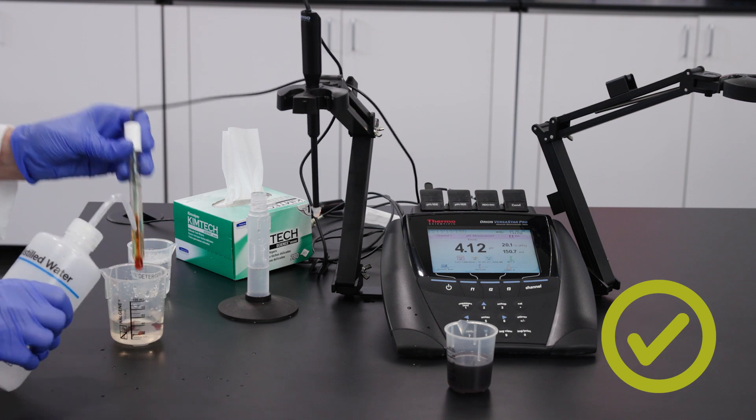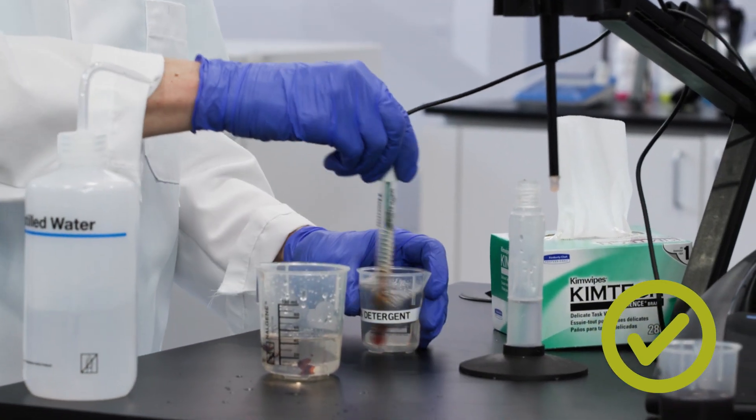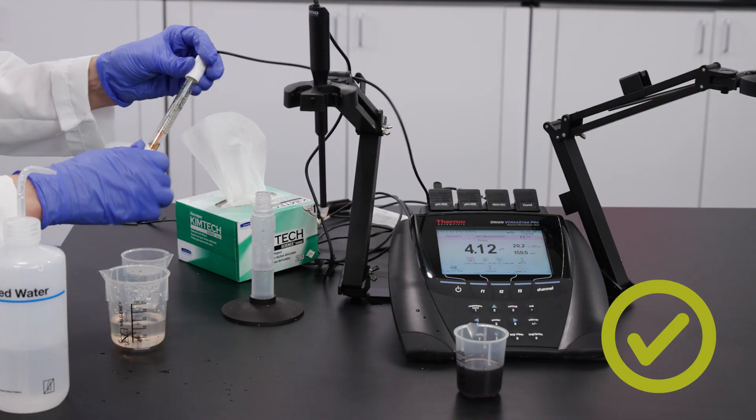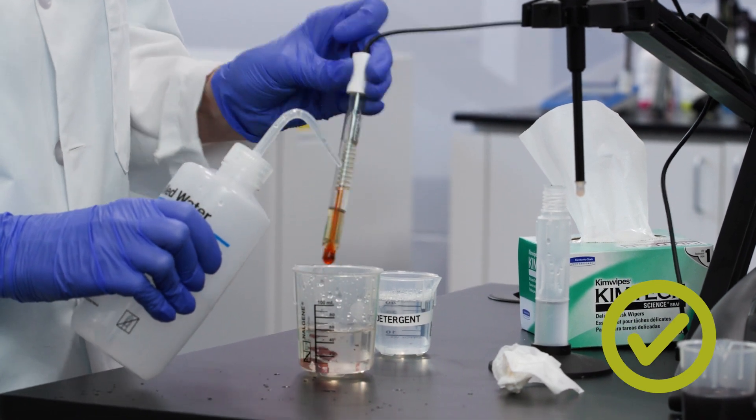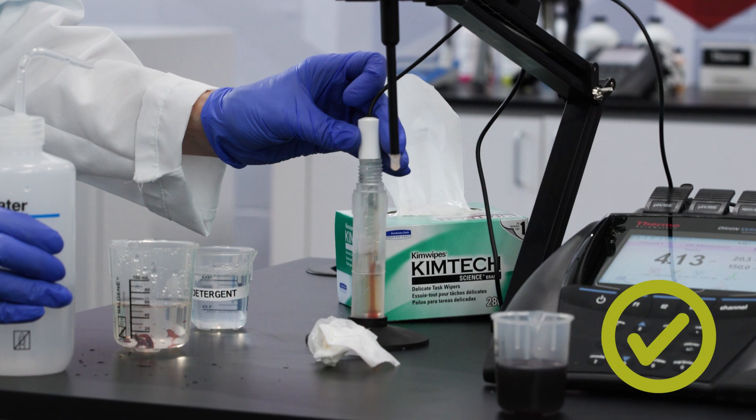For good performance, rinse the electrode before storage. Wipe it if needed, wash it in 1% soap, or soak it using a special electrode cleaning solution. Follow the package instructions, replace the fill solution, and soak overnight.